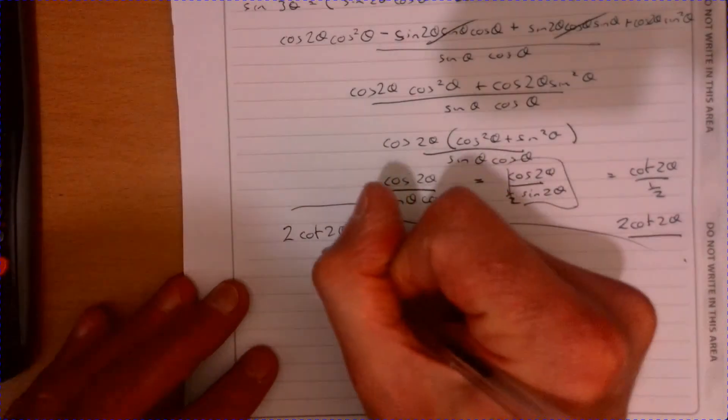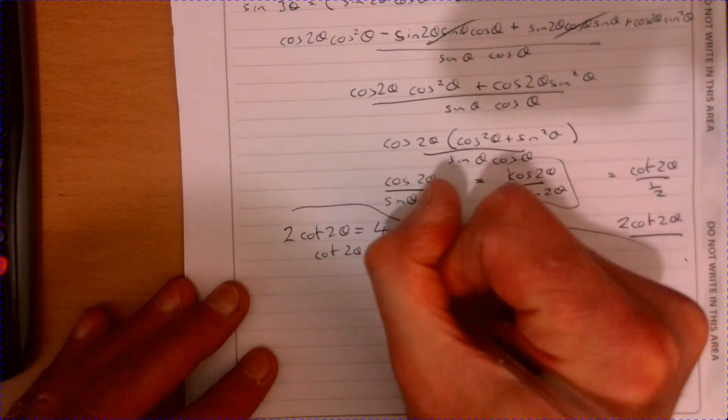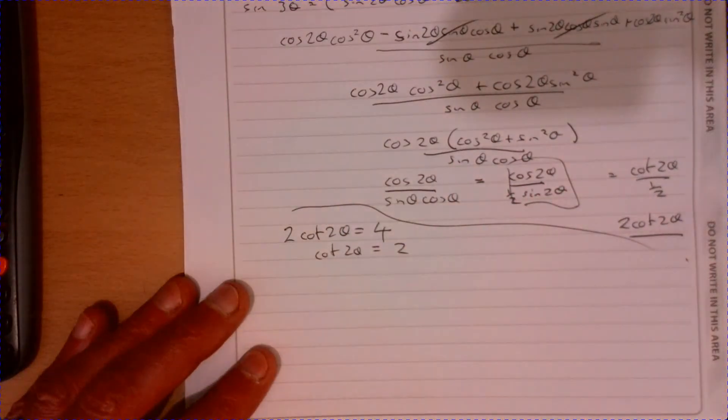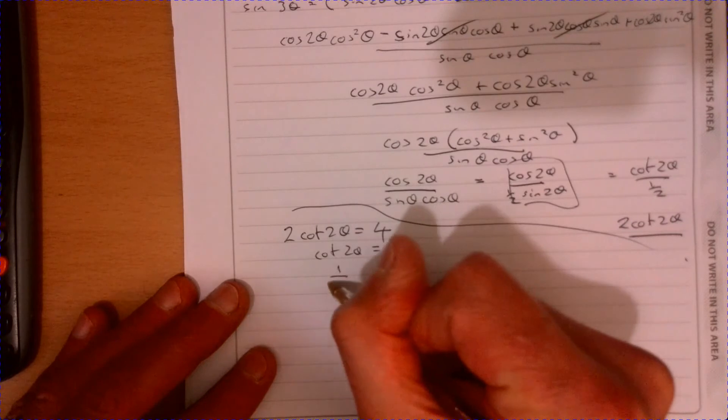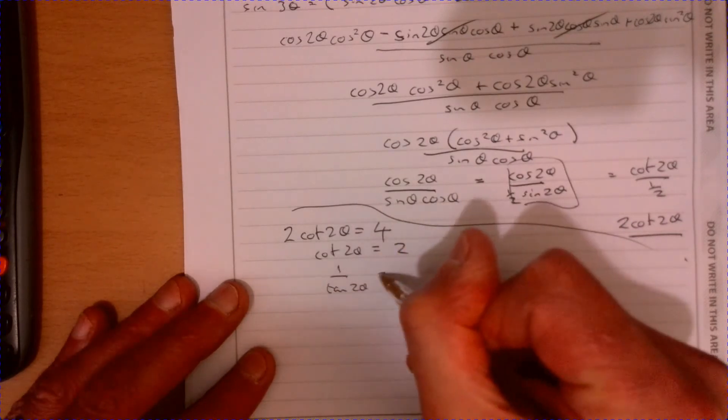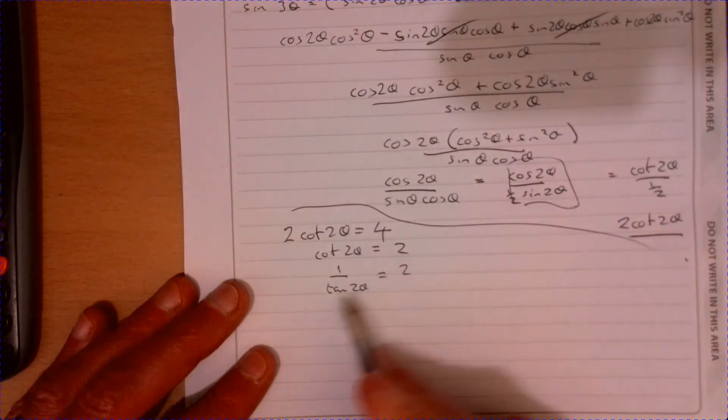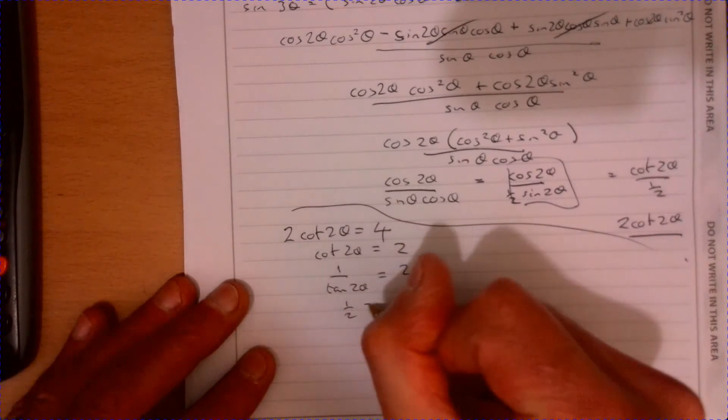Divide by 2, so cot 2θ equals 2. Cot 2θ is one over tan 2θ equals 2, so those two swap around.